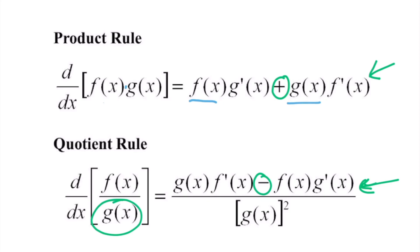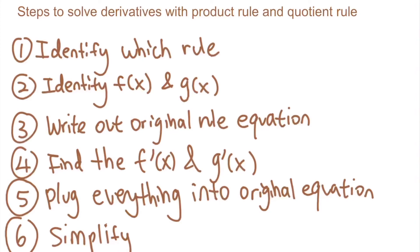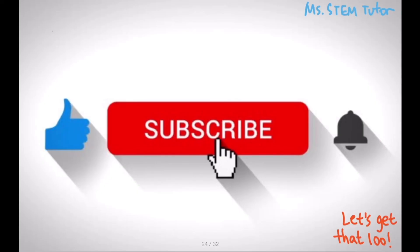Lastly, you plug everything into the original equation and simplify. That makes the whole process so much quicker. Here's a summary of the steps: identify which rule — product or quotient. Identify f of x and g of x. Write out the original rule equation. Find the derivative of each function. Then plug everything into the original equation and simplify. This just makes your life so much easier. If you enjoyed this video, make sure you hit that like button, subscribe, and hit the notification bell for more content. It's Ms. STEMTutor here — let's go get that 100.